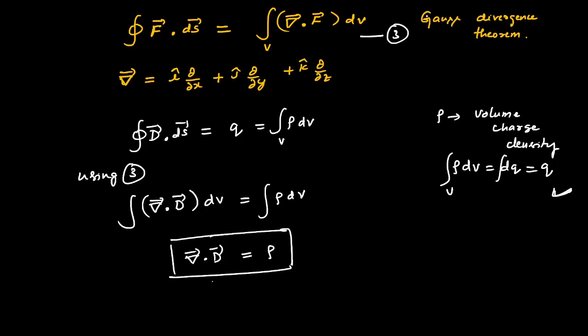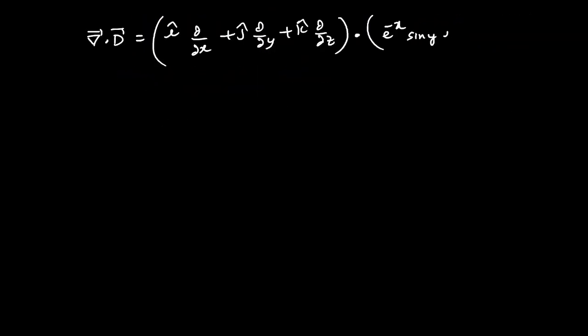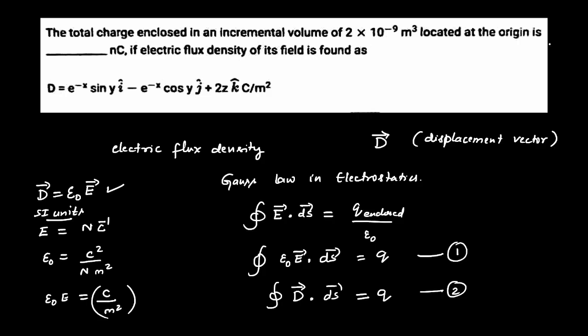Divergence of D: the divergence is (i ∂/∂x plus j ∂/∂y plus k ∂/∂z) dotted with (e^-x sin y i cap minus e^-x cos y j cap plus 2z k cap). I'm writing everything that is given here.